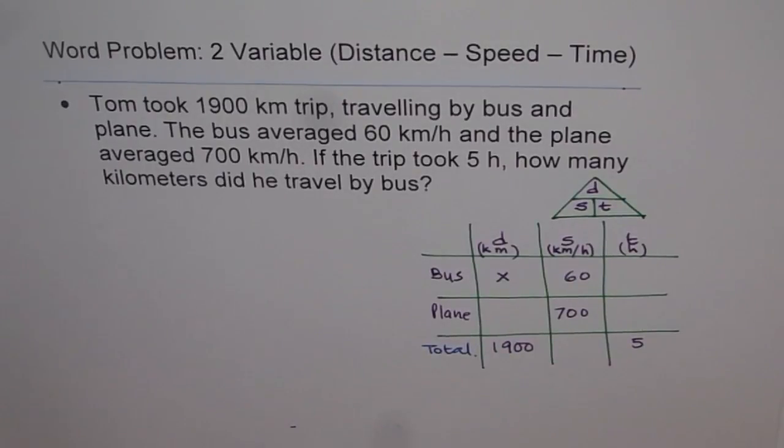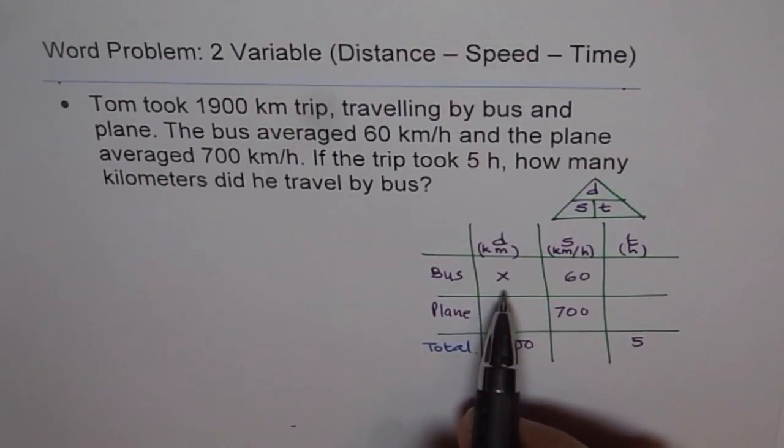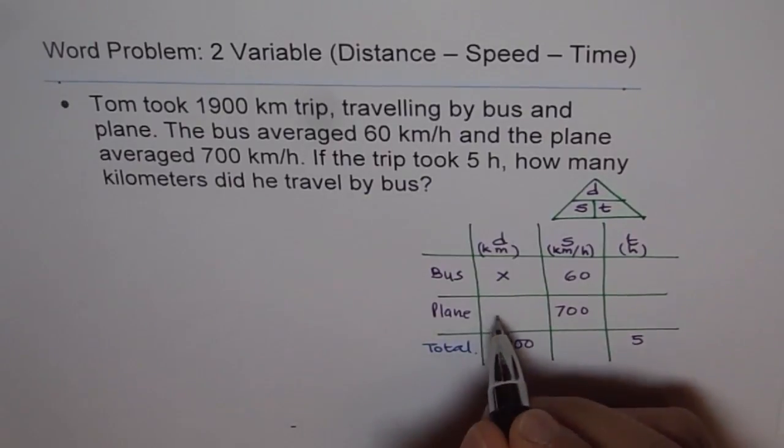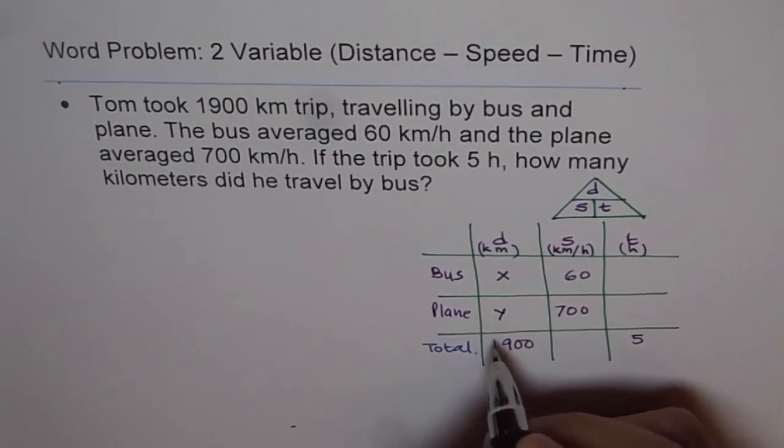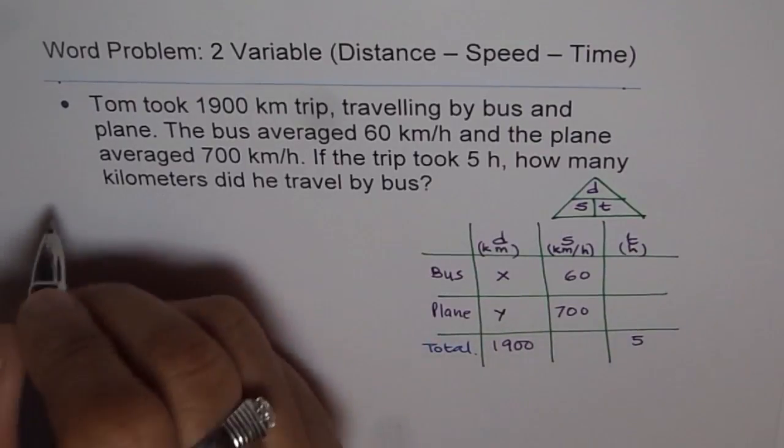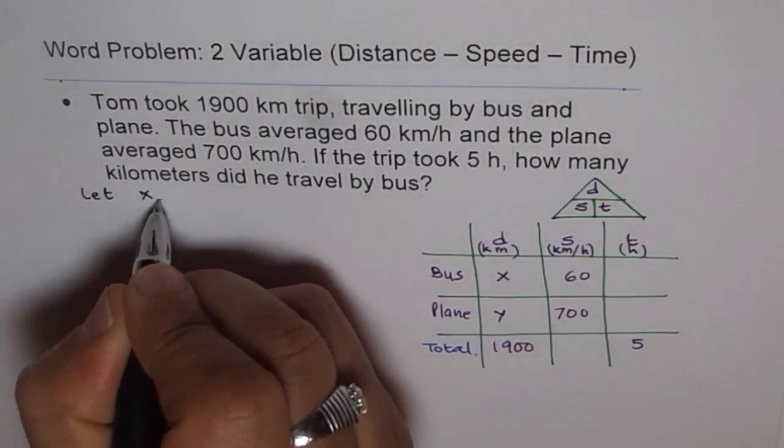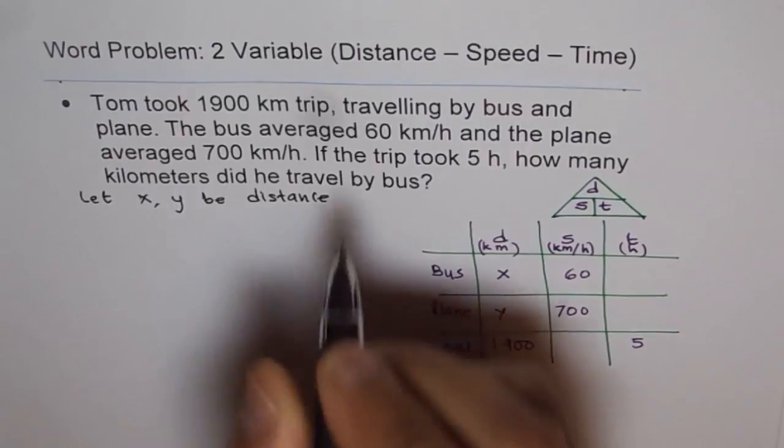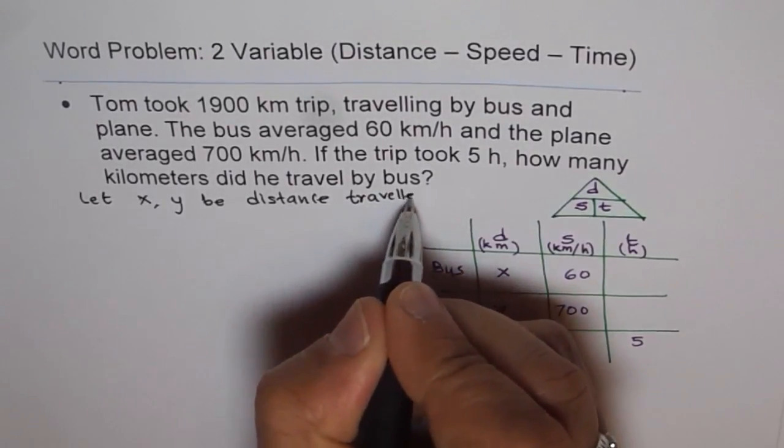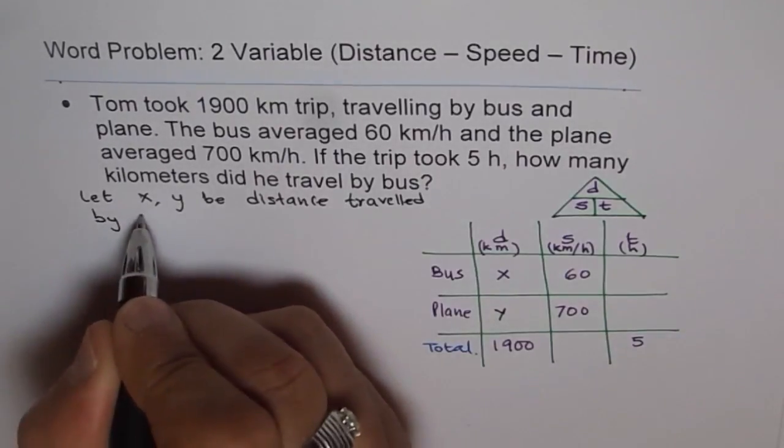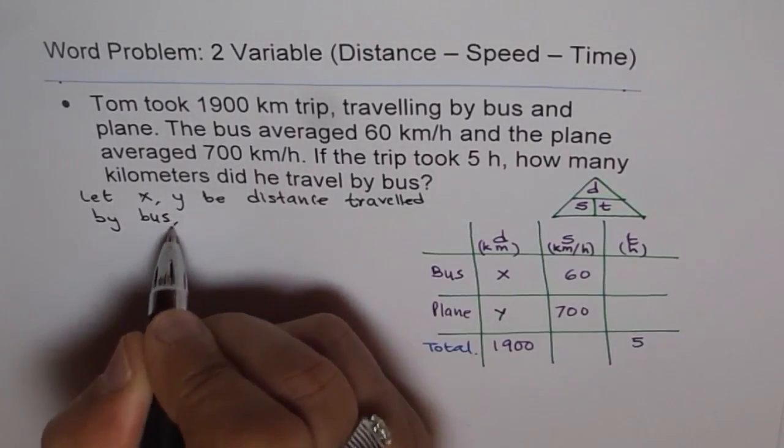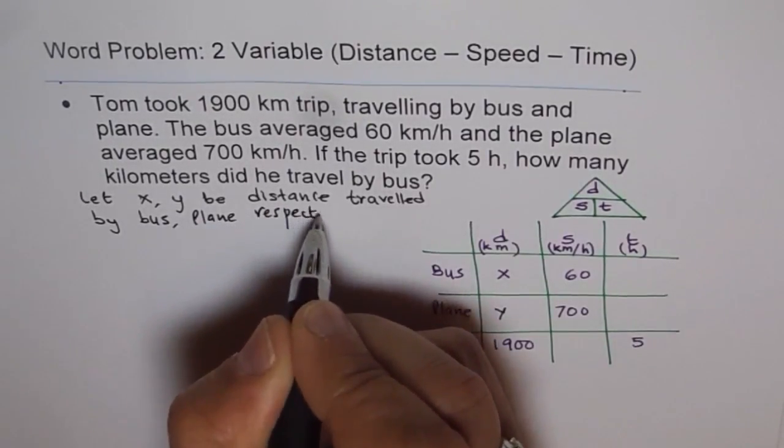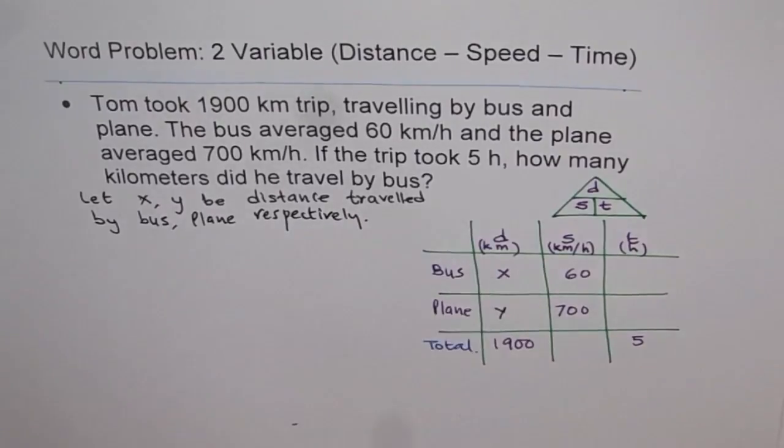Now, let us get back to the question and define our variables. The variable here is: let X be the distance traveled by bus, and let Y be the distance traveled by plane. So that is our variable. The let statement is: let X and Y be distance traveled by bus and plane respectively. So we have defined our variables.